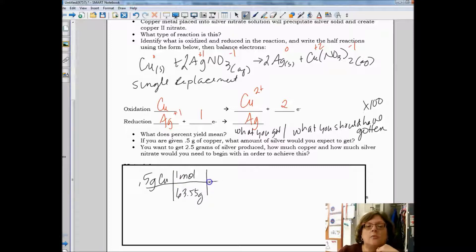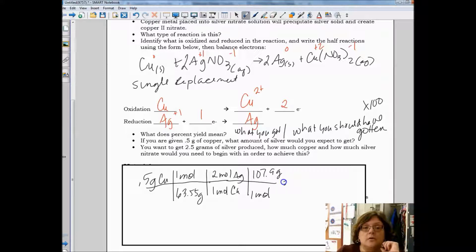That gives us moles of copper. Our ratio of copper to silver is one to two, one mole of copper to two moles of silver. That will tell us how much silver we should make. The amount of silver, 107.9 in one mole, and you can do the math on your own.